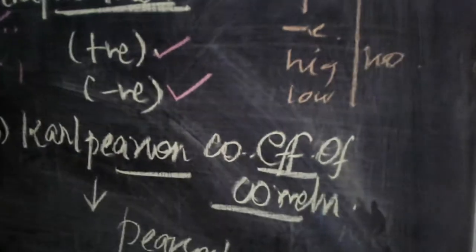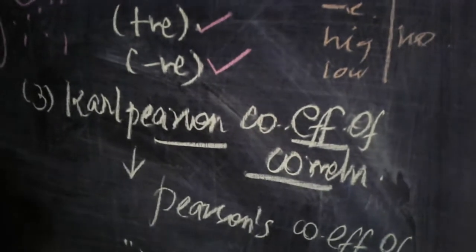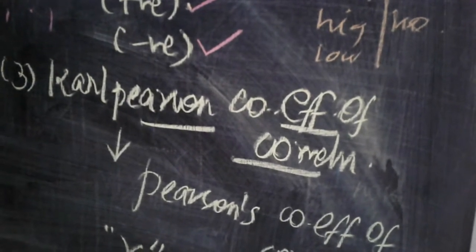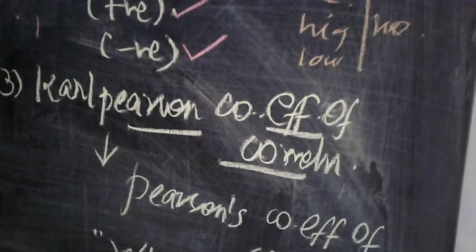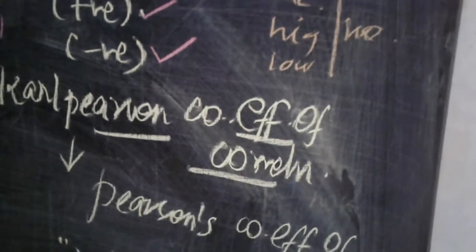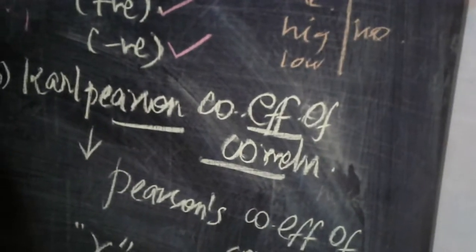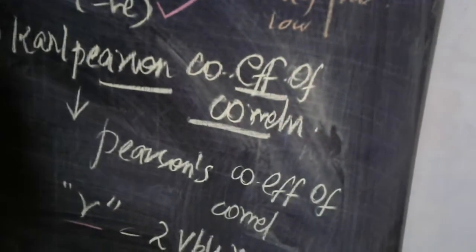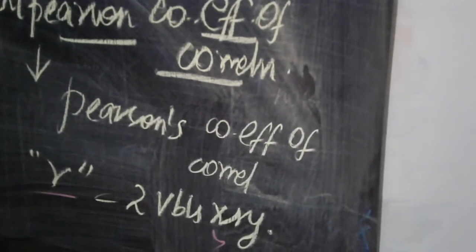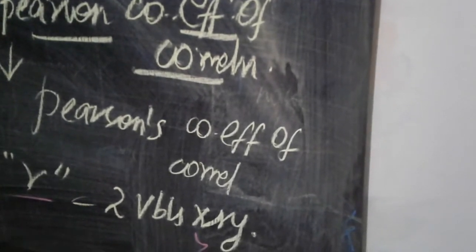The third important method of studying correlation is Karl Pearson's coefficient of correlation. It was introduced by Karl Pearson and is represented by the symbol r. It shows the relationship between two variables, x and y.